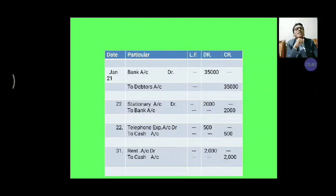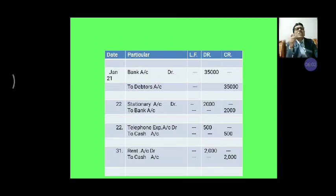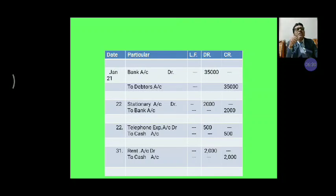Then, on 21st January, bank account debit Rs. 35,000 to debtor account Rs. 35,000 — because the amount is collected from the debtor. Then, on 22nd January, stationery account debit Rs. 2,000 to bank account Rs. 2,000, because stationery expenses paid by bank. Again, one transaction on 22nd January: telephone expenses account debit to cash account Rs. 500. On 31st January, rent account debit Rs. 2,000 to cash account Rs. 2,000 — rent paid by cash.